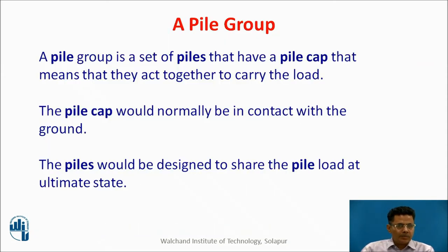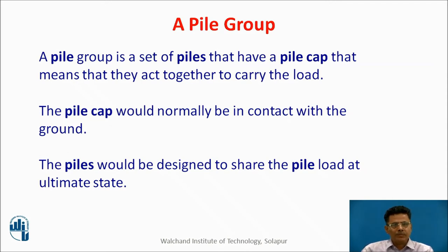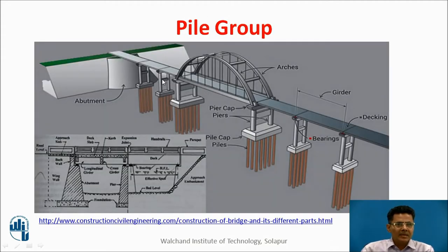Now, a pile group. We need to group piles to transmit heavy loads. A pile group is a set of piles with a pile cap so they act together to carry the load. The pile cap is normally in contact with the ground and the piles are designed to share the pile load at the ultimate state. Here we can see a bridge where the bridge piers transfer the load to a pile cap, and through the pile cap the load is transferred to the piles, and ultimately to the hard strata below.